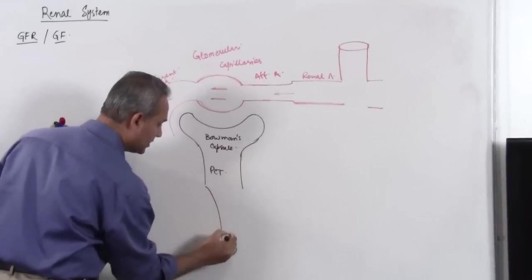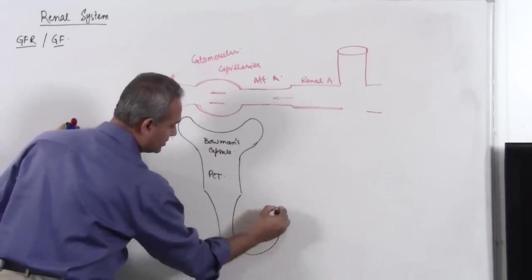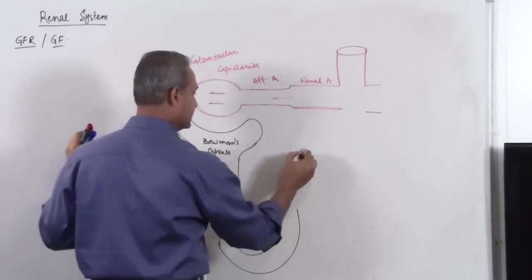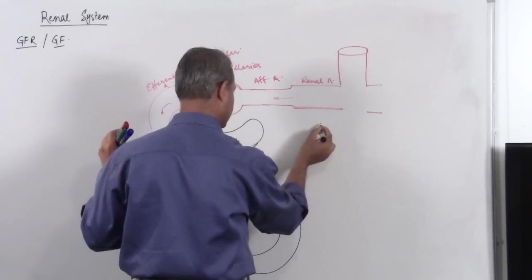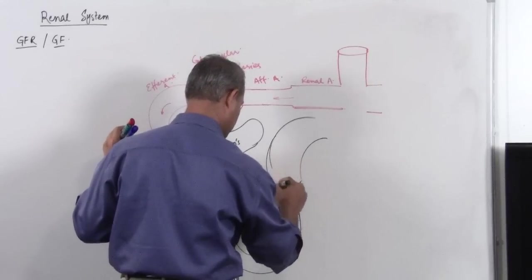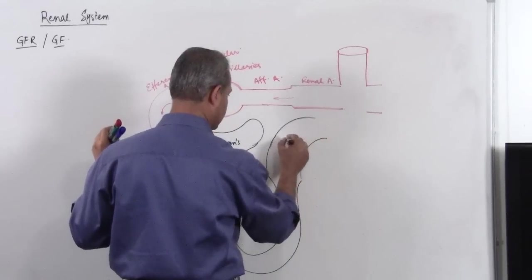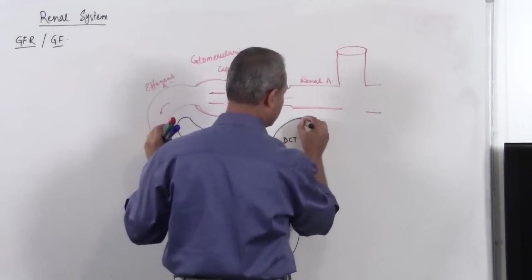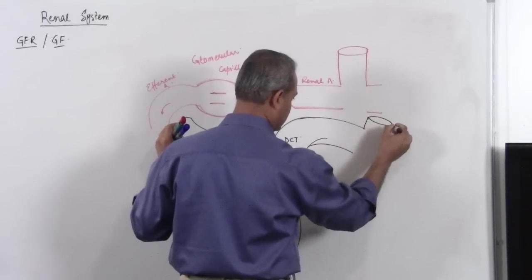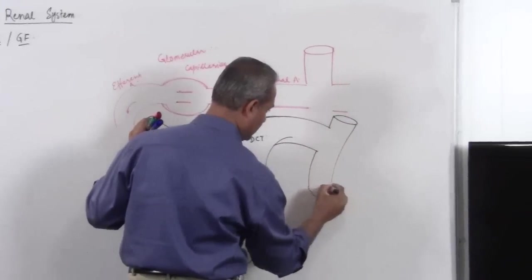Then let's say this is loop of Henle, then there is distal convoluted tubule which then goes and opens up in collecting duct.